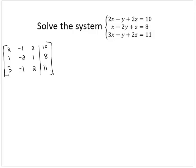The first goal in using Gaussian elimination is to make the upper left element a 1. I'm going to exchange rows 1 and row 2 since I see a 1 already. So I'll rewrite this as 1, negative 2, 1, 8, 2, negative 1, 2, 10, 3, negative 1, 2, 11.